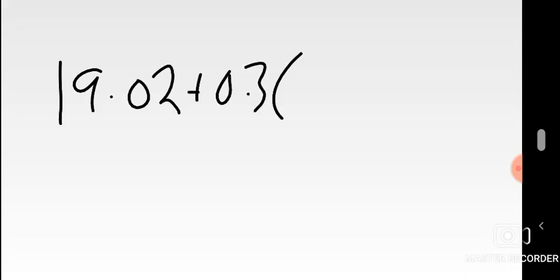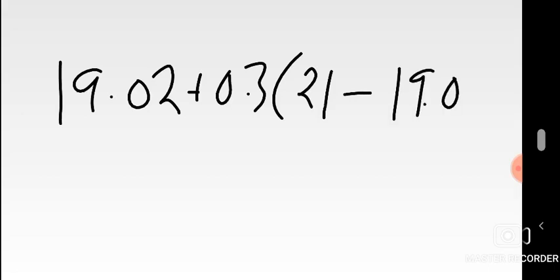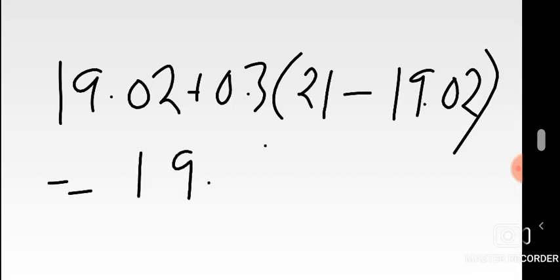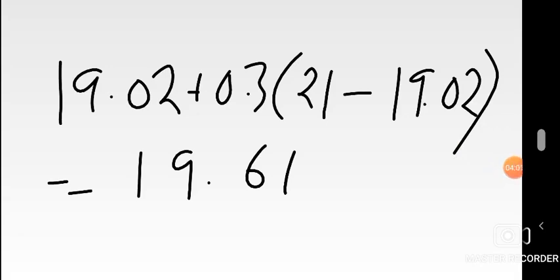Using November's forecast of 19.02, we can now find December's forecast. Previous month's forecast is November's 19.02; actual sales in November is 21. Applying the formula: 19.02 + 0.3 × (21 - 19.02) = 19.02 + 0.3 × 1.98 = 19.02 + 0.594 = 19.61. The December forecast is 19.61.